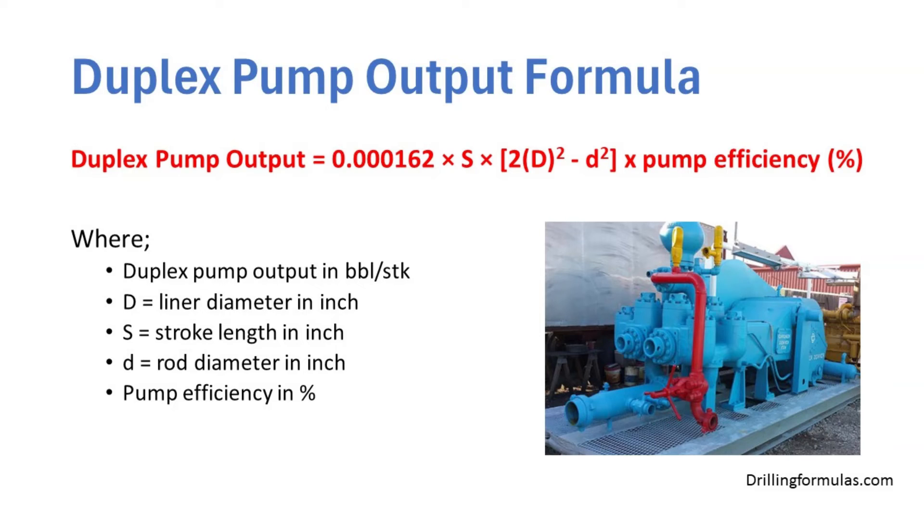Where duplex pump output is in barrel per stroke, capital D is liner diameter in inch, S is stroke length in inch, small d is rod diameter in inch, and pump efficiency is in percentage.